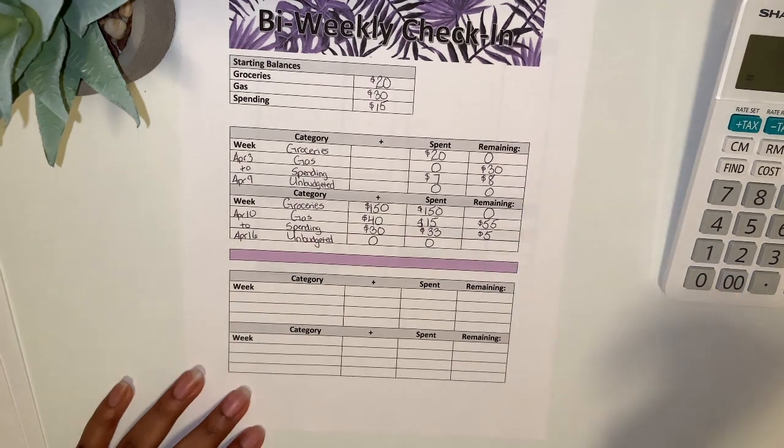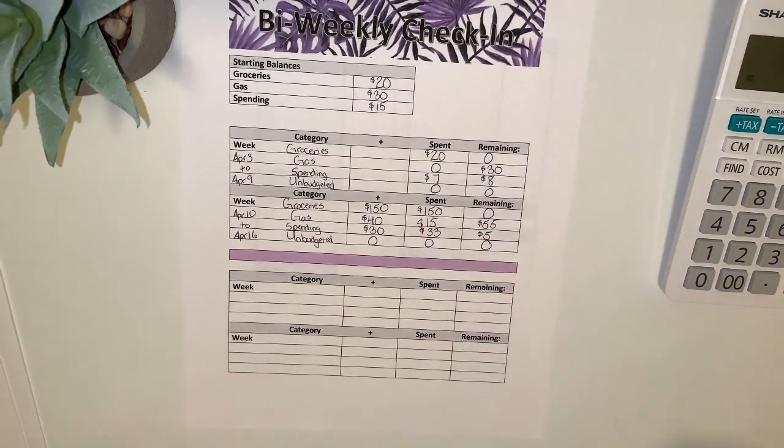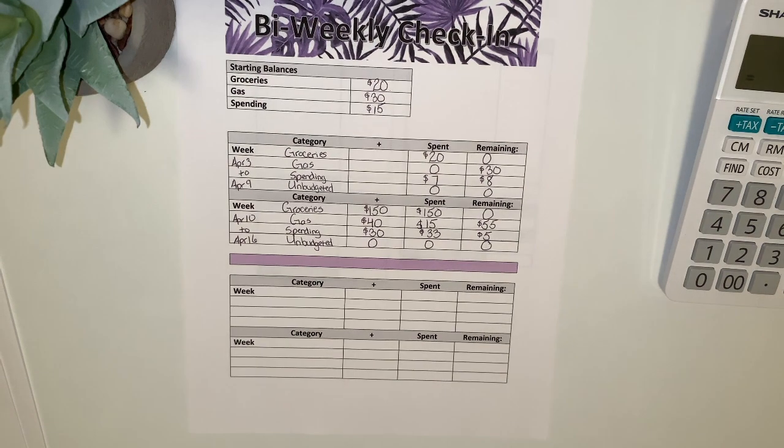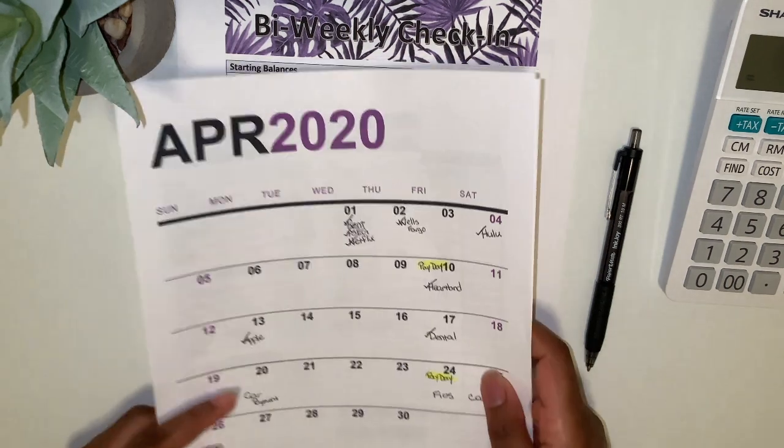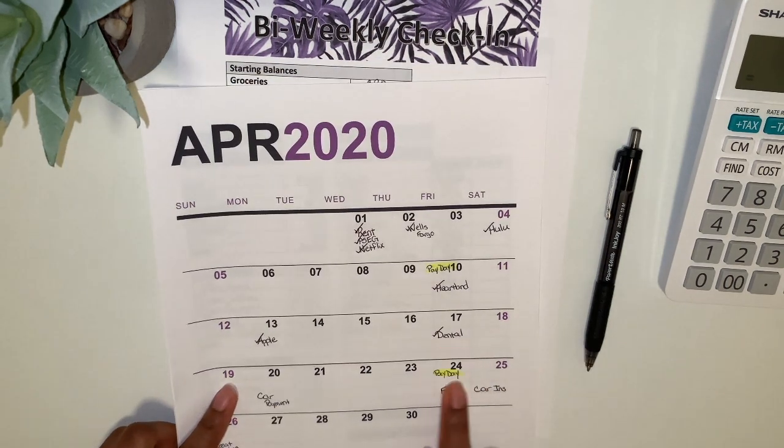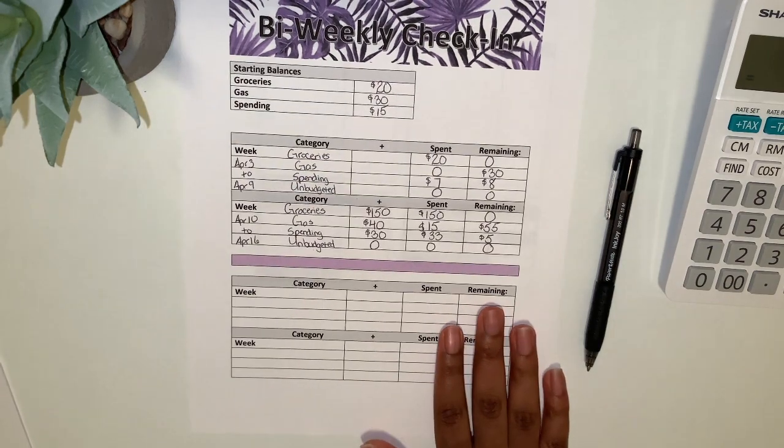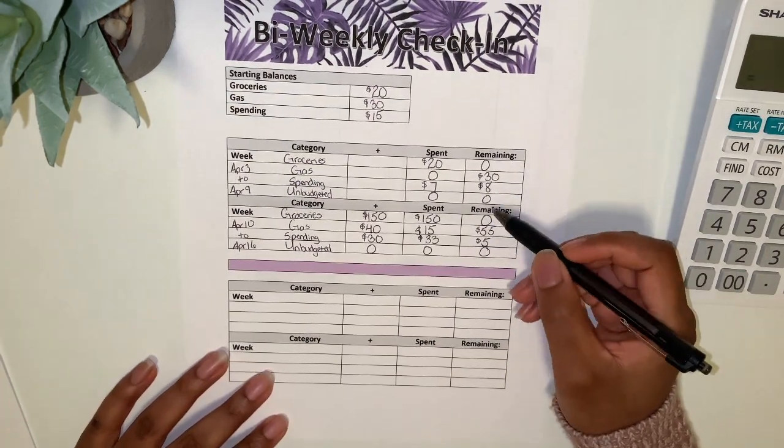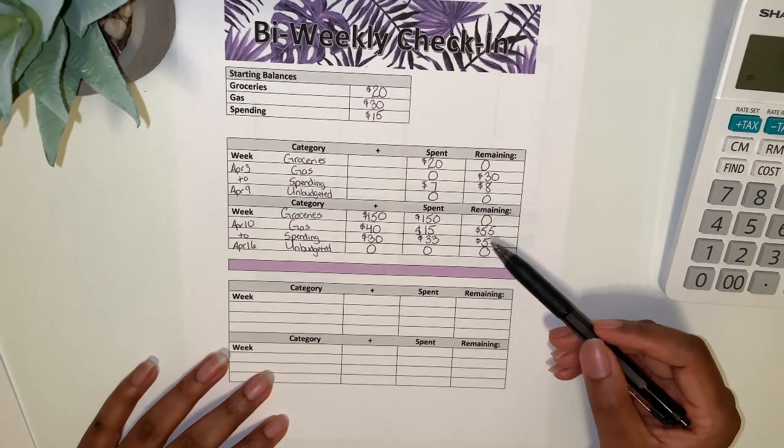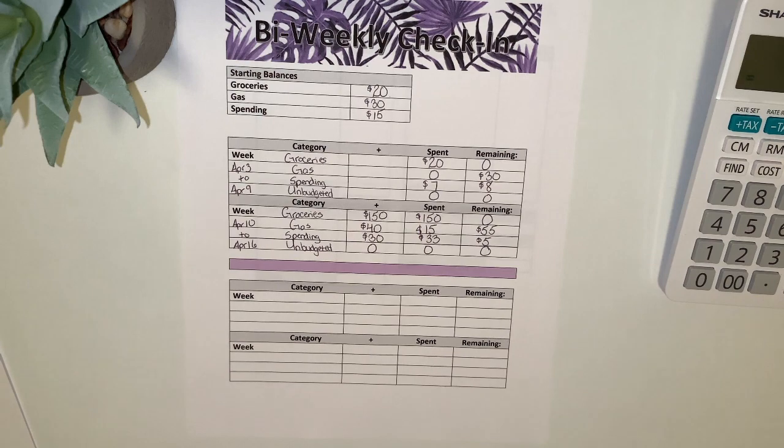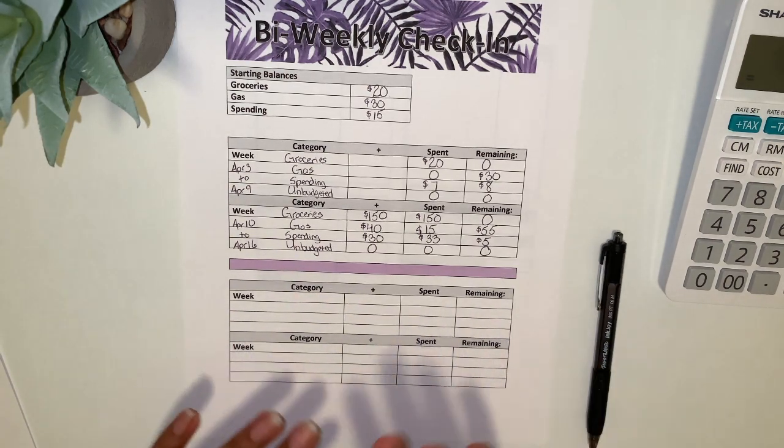And then unbudgeted still remains zero, which is great. So me looking at this, I just want to always make sure, since it is the 17th and I'm not getting paid again until the 24th, I want to make sure that I would have enough money just to get through the week. And this looks good to me. I'm not going anywhere, I'm literally sitting in the house, so I just won't do any spending. But that should be enough to get me at least to my next paycheck, which is always great.